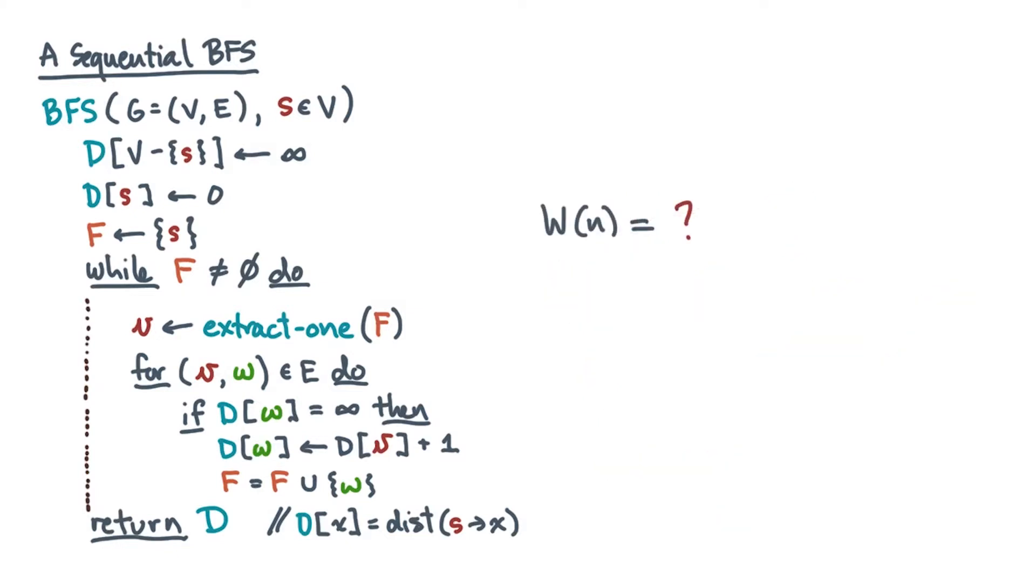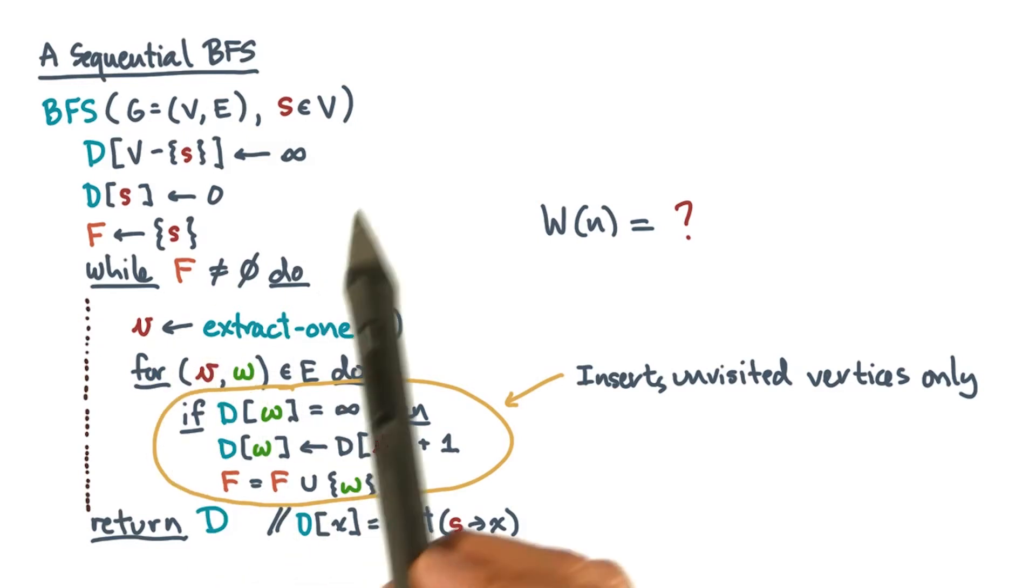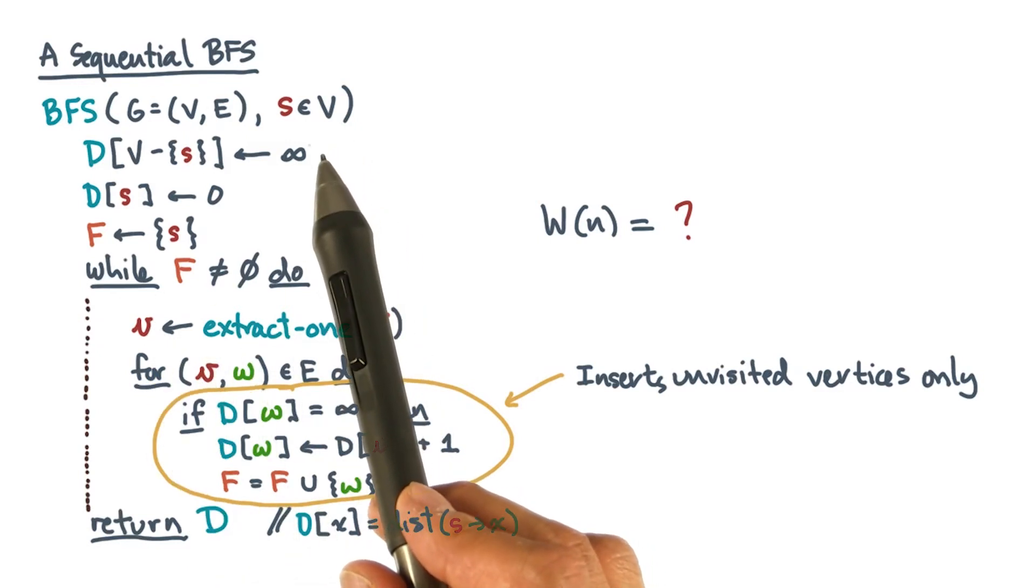Now, what is the cost of this algorithm? Since you traced its execution, as I suggested, then you observe that it only inserts a vertex into F if it has not yet been visited. Therefore, the number of iterations of the while loop shouldn't be more than the number of vertices or the size of V.